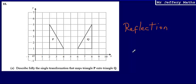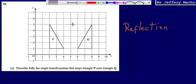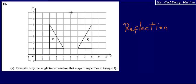But then I also need to say where has it been, what line has it been reflected in? What was the mirror line that has allowed me to get from P to Q? And what I can see here is that that mirror line is just going to be just there.